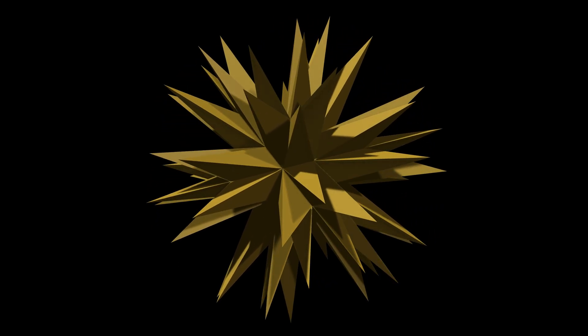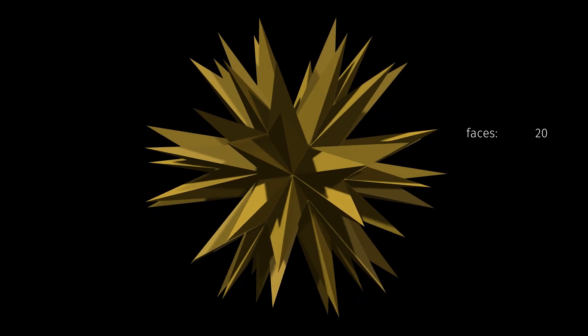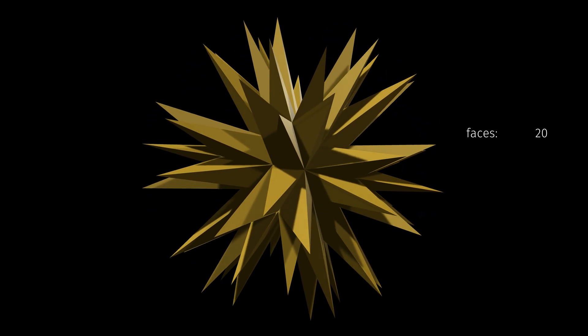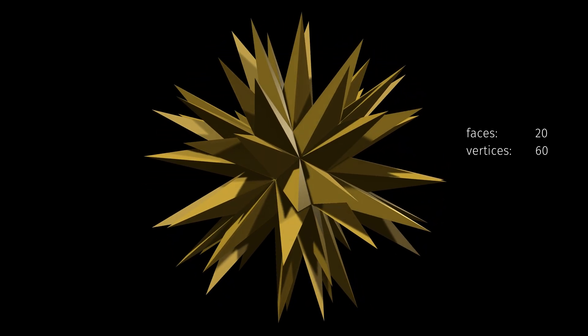Now there are just 20 of these enneagramic faces, all identical. The concave corners where edges meet are no longer counted as true vertices, so only the 60 identical spiky vertices remain.